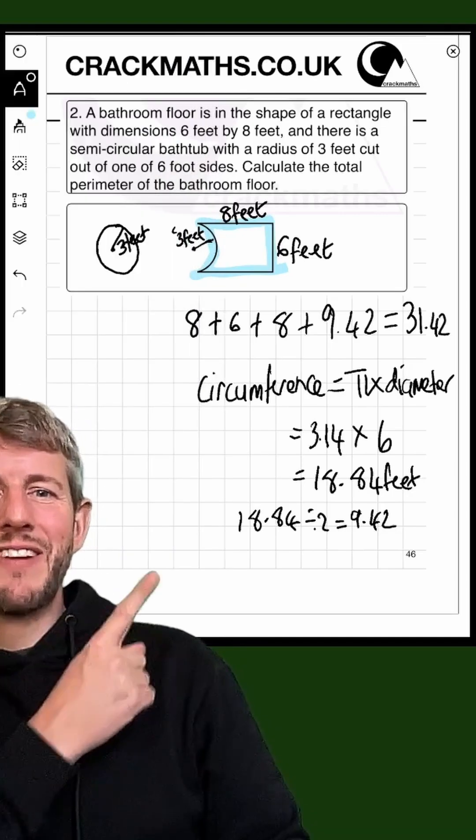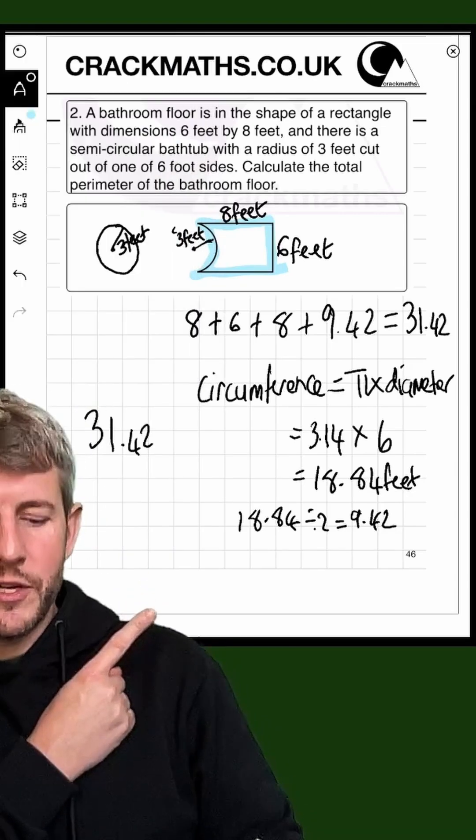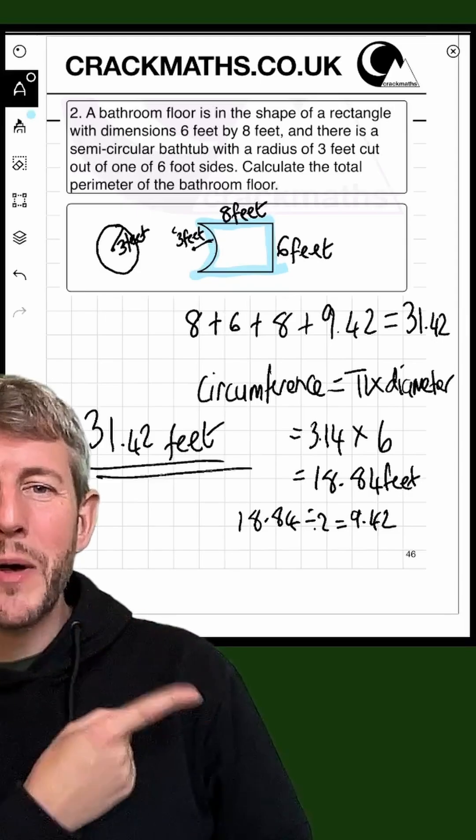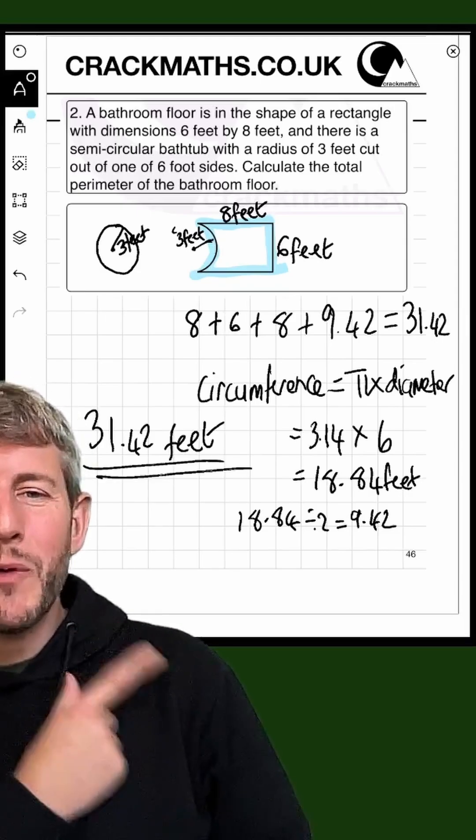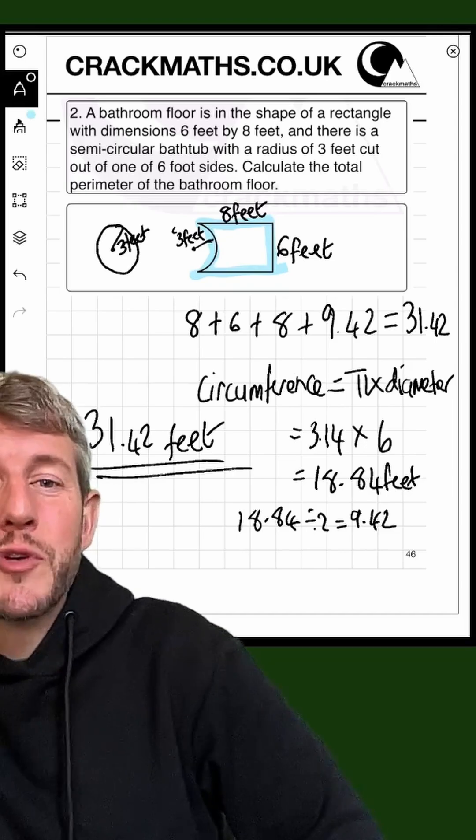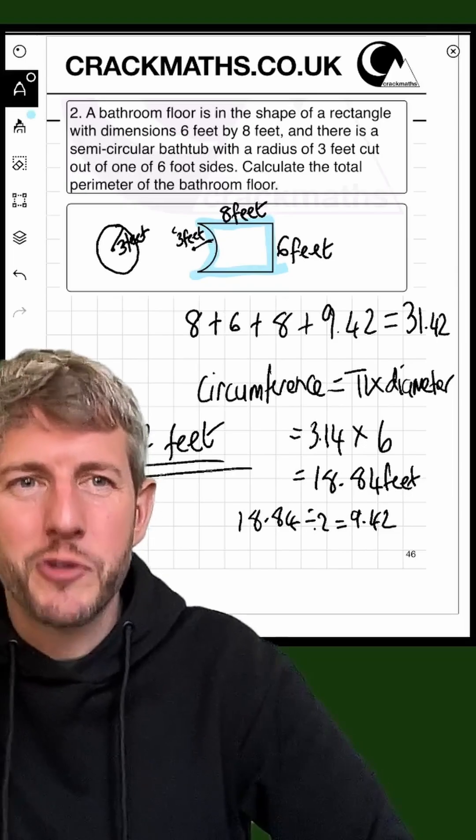Now let me just rewrite this here: 31.42 feet, and it stays as feet because remember perimeter is a length. If you need more work on the perimeter of compound shapes, make sure you check out tutorial 46 at crackmaths.co.uk.